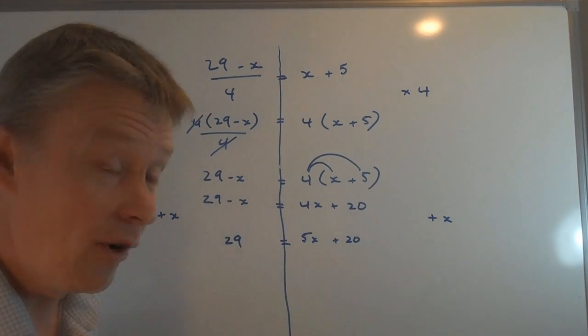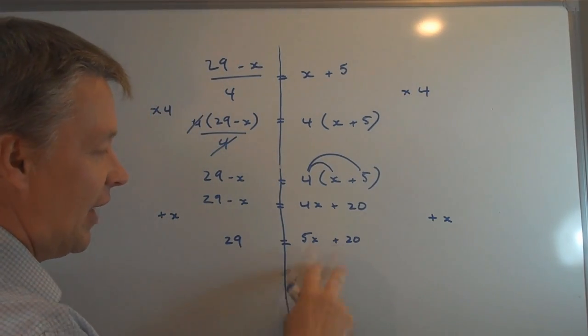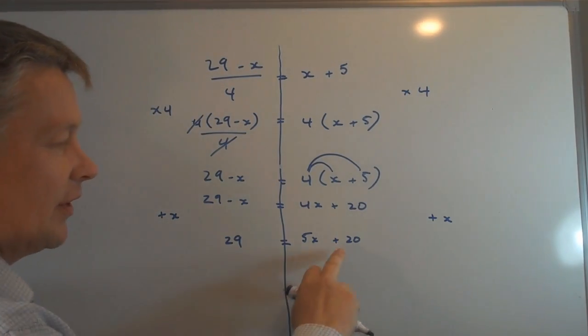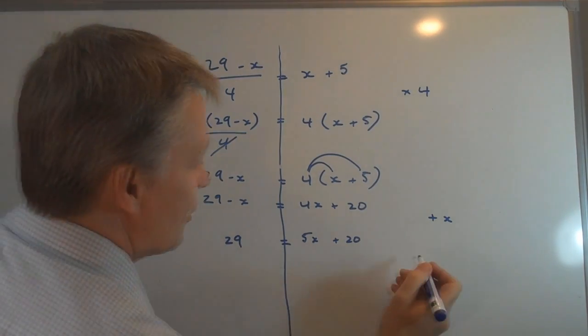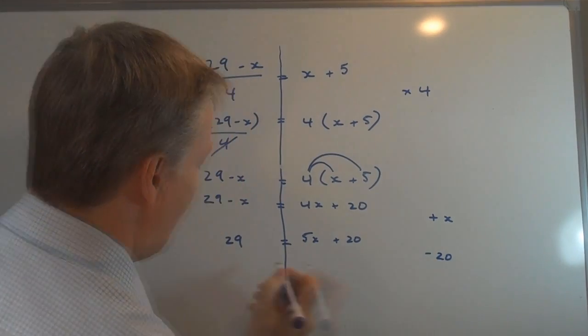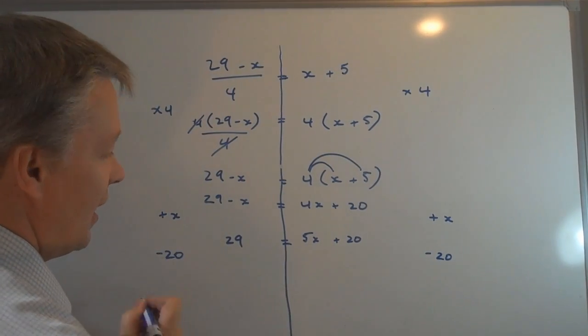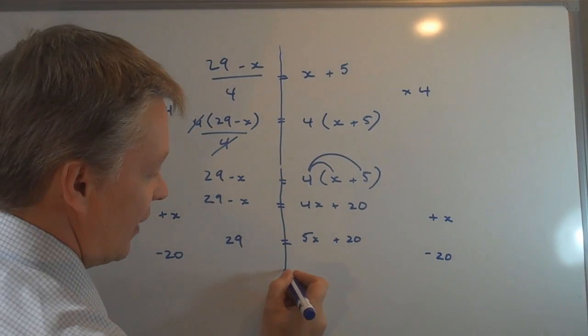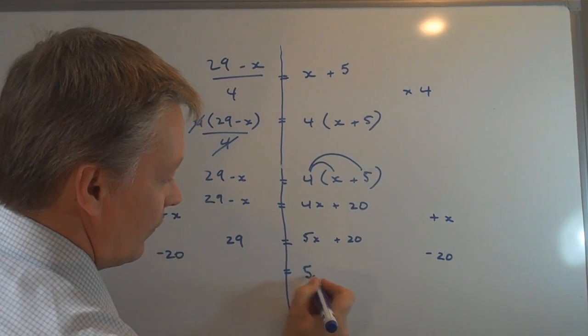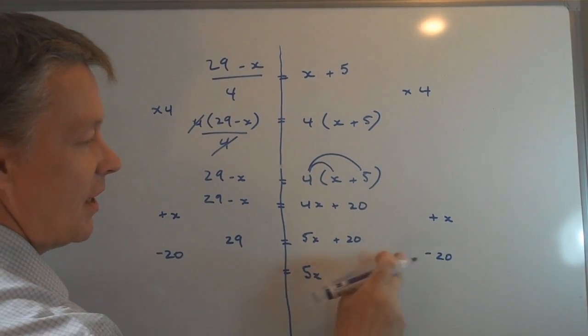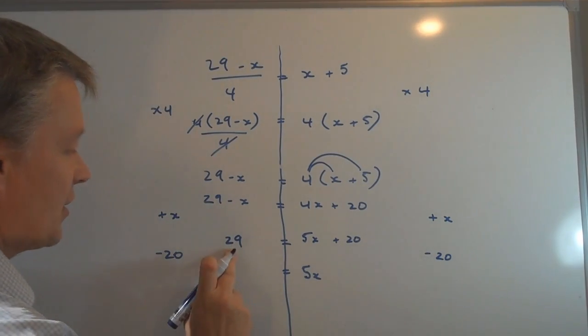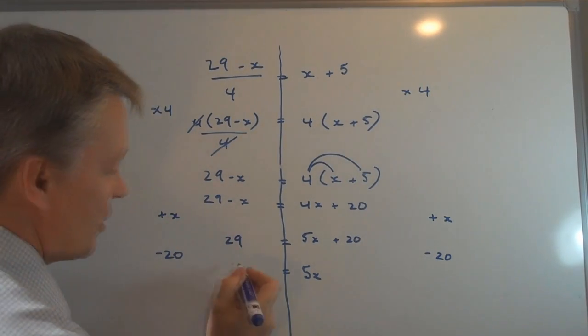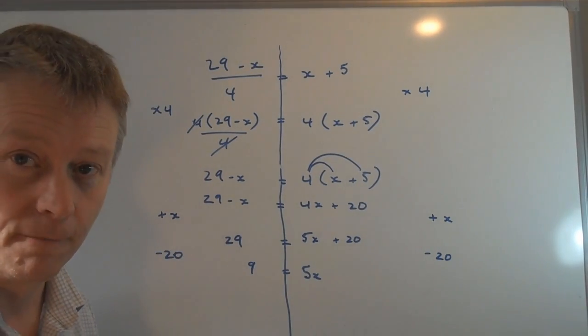Okay, now like before, I want to make sure that I have x's on one side and numbers on the other. So I'm going to minus 20 from both sides. So if I'm minus 20 here and minus 20 here, I get 5x on this side, because positive 20 minus 20 is zero. And on this side, I get 29 - 20, which is 9 on its own.